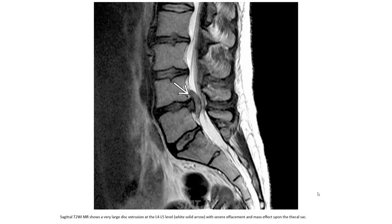This is a sagittal T2WI showing a very large extrusion at the L4-L5 level, indicated by the white solid arrow, with severe indentation and mass effect upon the thecal sac.